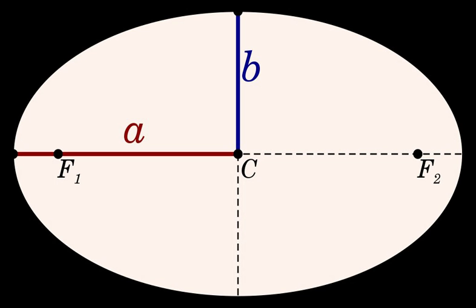The semi-minor axis of an ellipse or hyperbola is a line segment that is at right angles with the semi-major axis and has one end at the center of the conic section. The major and minor axes are the axes of symmetry for the curve. In an ellipse, the minor axis is the shorter one; in a hyperbola, it is the one that does not intersect the hyperbola.